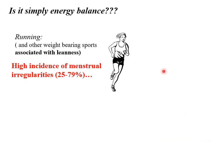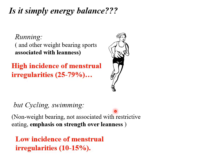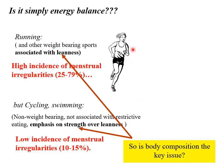Does it matter what type of exercise you do? Running and other weight-bearing sports, which are often associated with a lot of muscle and less fat, show a high incidence of menstrual irregularities with high energy output. But with cycling and swimming — non-weight-bearing sports that emphasize strength rather than leanness — there is a low incidence of menstrual irregularities, even though the women may be using up the same amounts of energy. So that raises a question: is body composition the key issue rather than energy balance?